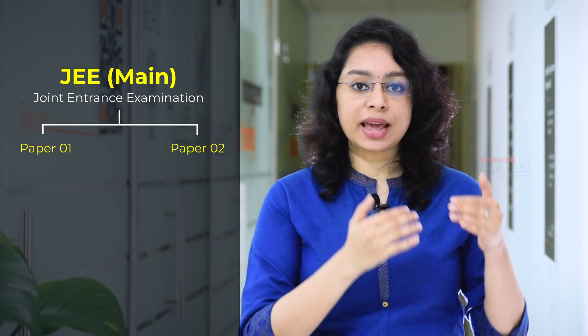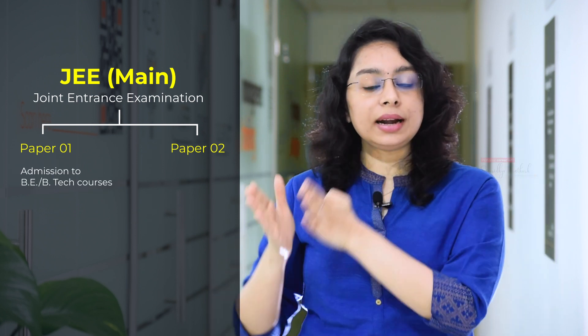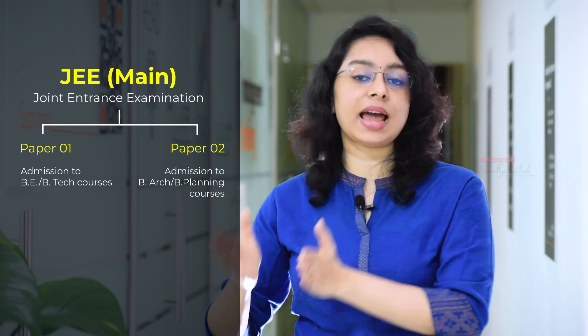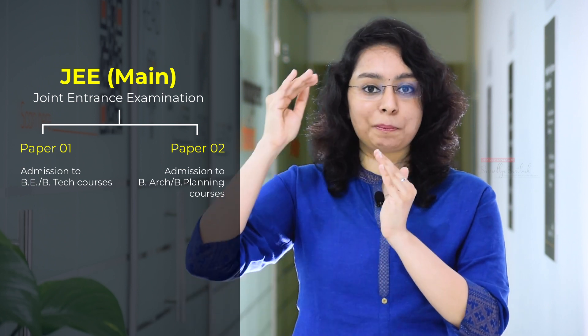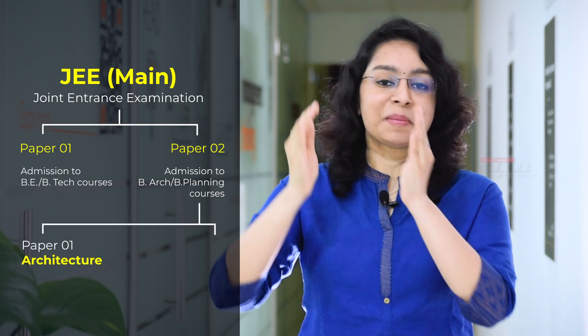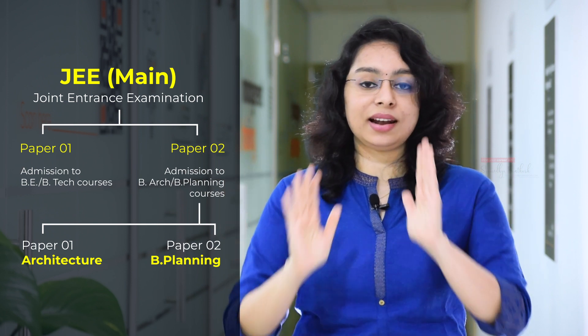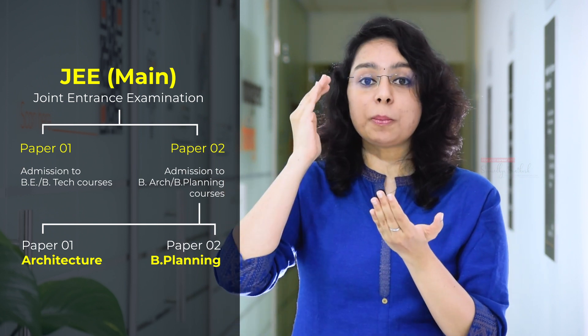The second entrance exam is JEE Paper 2 — Joint Entrance Examination Paper 2. There are two papers: Paper 1 is for engineering, and Paper 2 is for architecture (B.Arch) and B-Planning. For architecture, Paper 2 includes Mathematics with 25 questions, similar to JEE Paper 1, with MCQ-type and NVT-type questions.